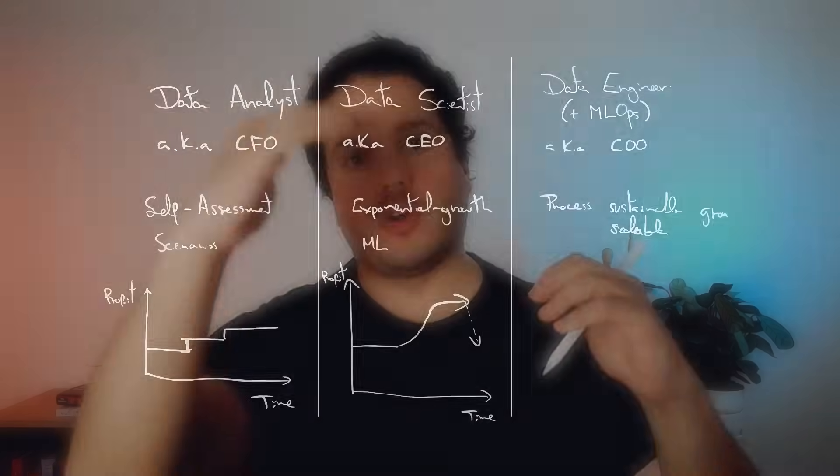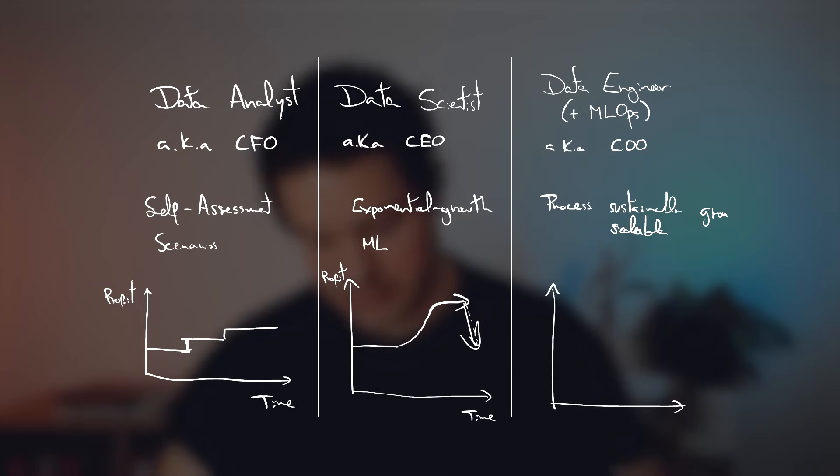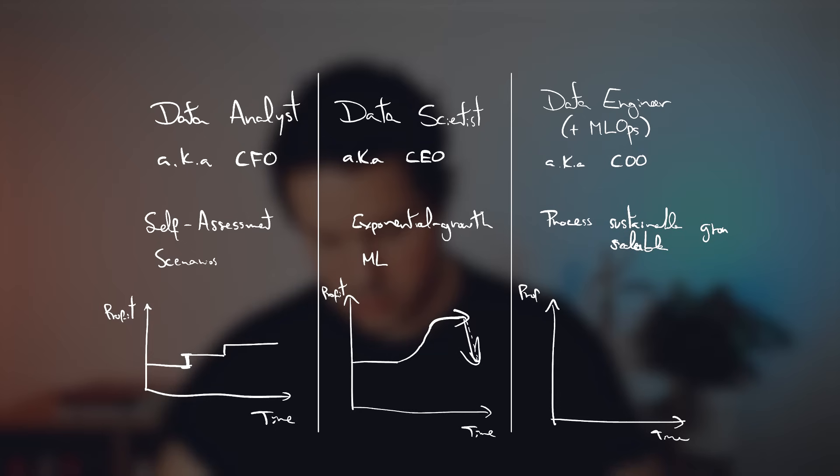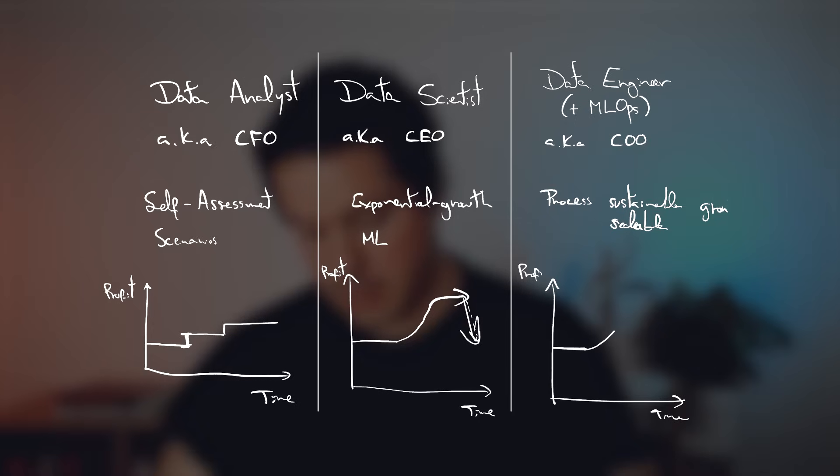While the data scientist provides this exponential growth vision of always improving, the data engineer is the one that actually puts the process in place that will prevent this plateau from happening, or even this massive drop. So combined with a data scientist, a data engineer will be able to either remove this plateau or move it far away and prevent the drop. This drop happens mainly due to technical debt — data scientists tend to accumulate technical debt and don't work much on the infrastructure side, so at some point you will have a lot of extra work from processes that need to be maintained.